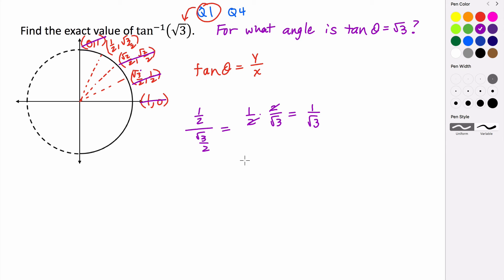So it looks like it's going to be at π/3. But let's just double check to make sure. So √3/2 divided by 1/2, that's √3/2 times the reciprocal, 2/1. These cancel. We end up with √3/1, which is just √3.